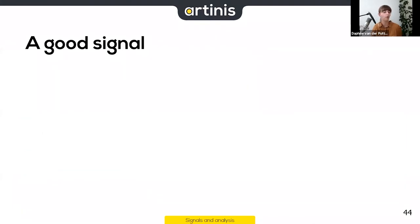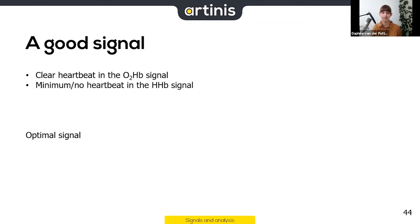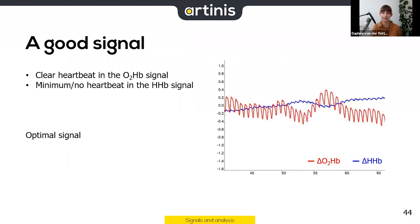What does a good signal look like? Sometimes you'll see things in your signal that you're not interested in — like the heartbeat — but this can actually tell you a lot about signal quality. In oxyhemoglobin (red), you'd expect a nice clear heartbeat, since most of the blood comes from the heart. In deoxyhemoglobin, you might see a little heartbeat or none at all. A clear heartbeat in oxyhemoglobin and minimal in deoxyhemoglobin is the optimal signal.